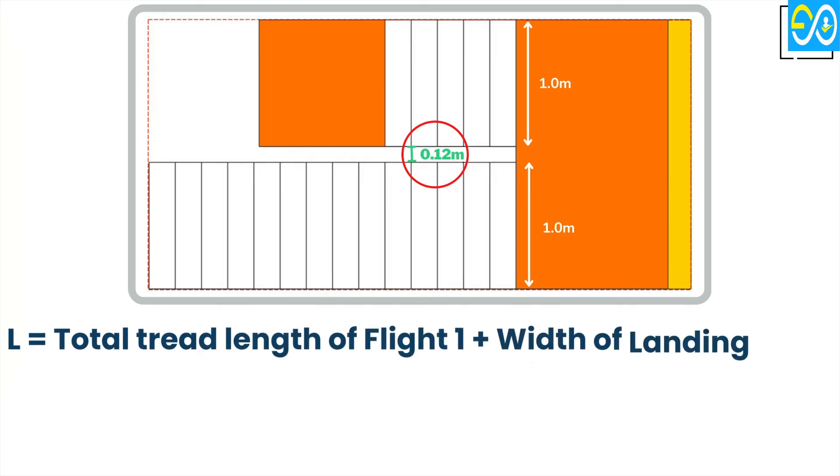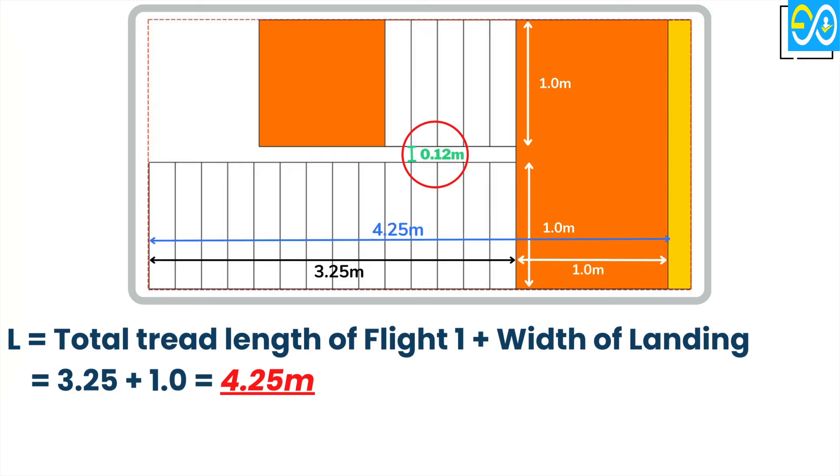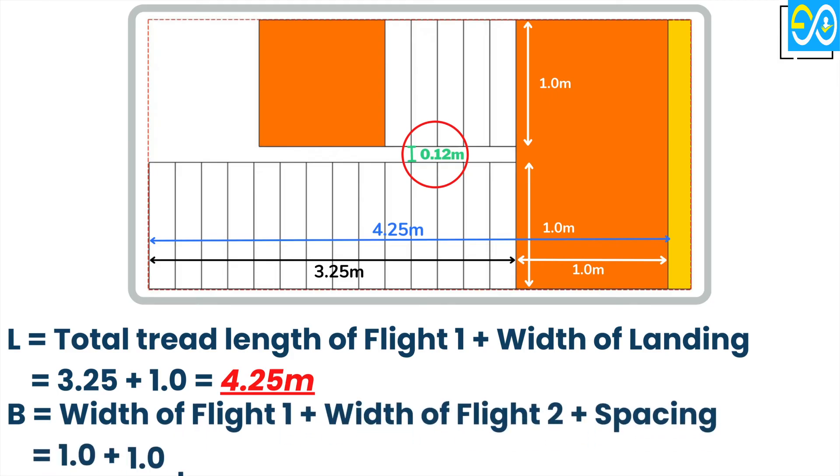Total length required for stair equals total tread length of flight 1 plus width of landing equals 3.25 plus 1.0 equals 4.25 meters. Total width required for stair equals width of flight 1 plus width of flight 2 plus spacing between two flights equals 1.0 plus 1.0 plus 0.12 equals 2.12 meters.